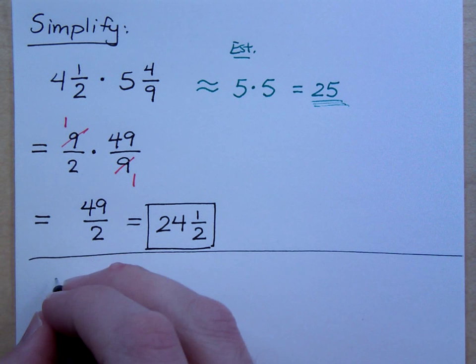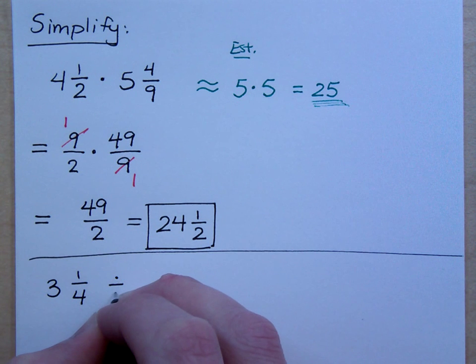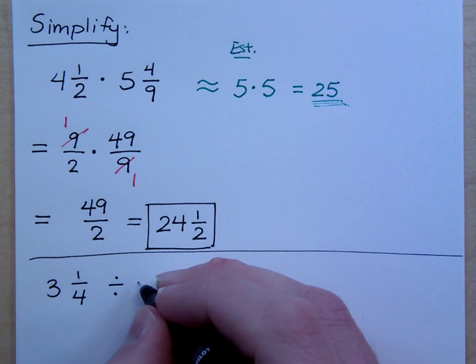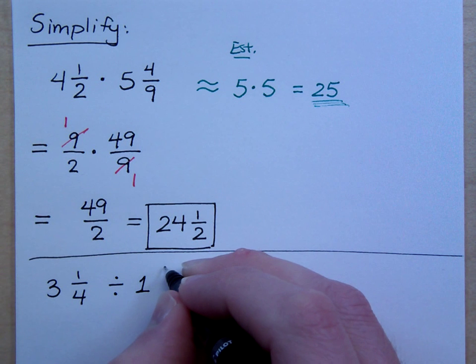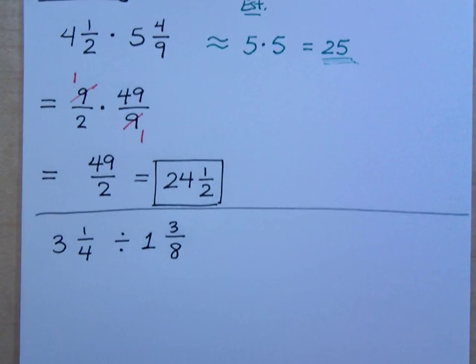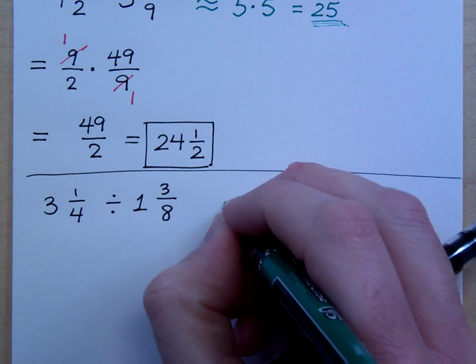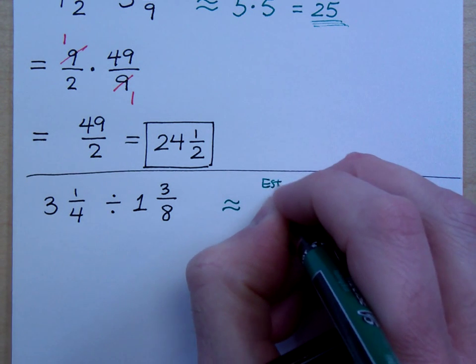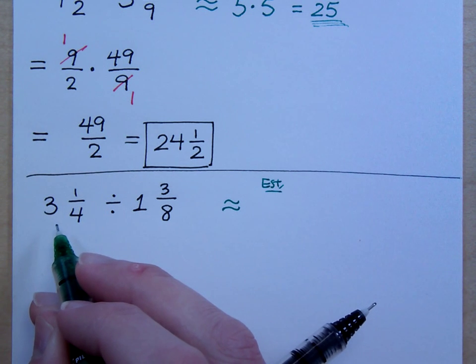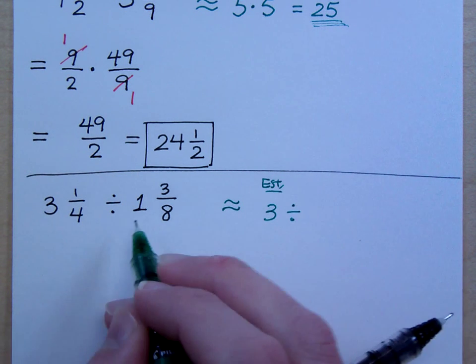So let's change this up a little bit. What if I have 3 and 1 fourth divided by 1 and 3 eighths. 3 and 1 fourth divided by 1 and 3 eighths. If I had to estimate this, so my estimation over here, how would you round 3 and 1 fourth?